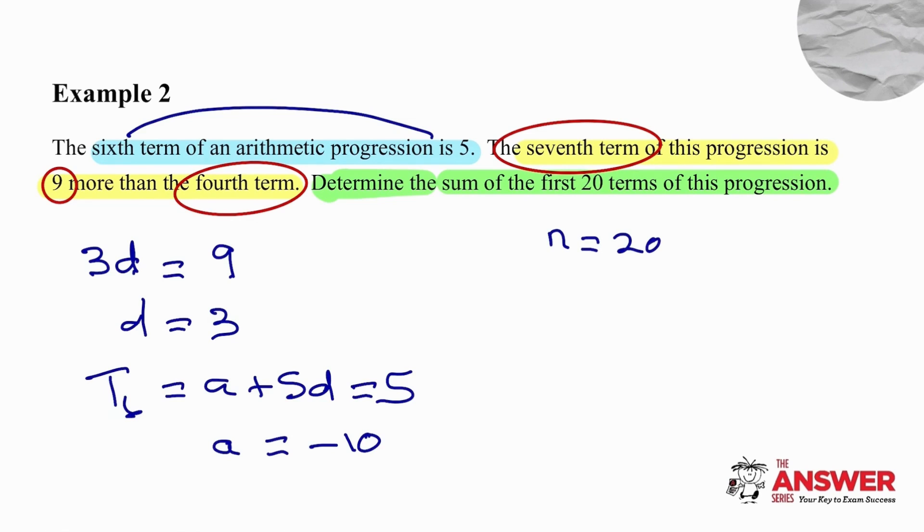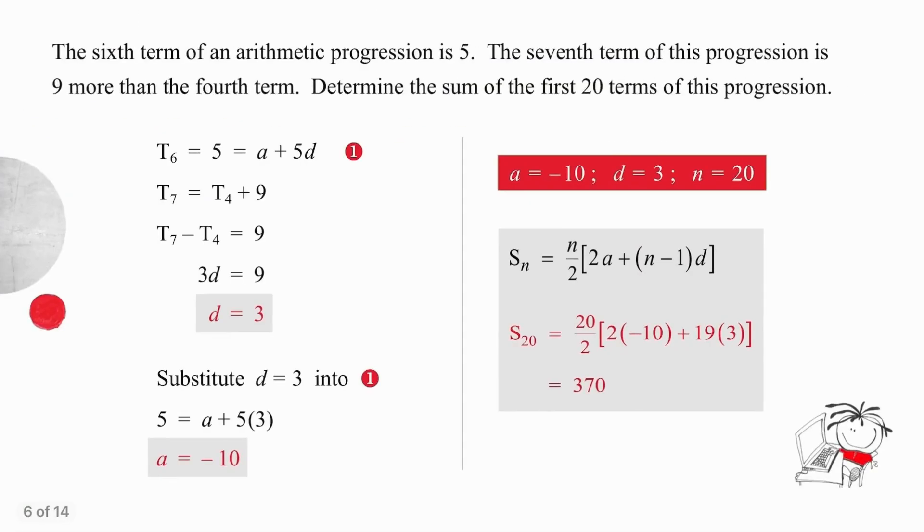So we simply use our A, our D, and our N value. Substitute these three values into the sum formula and work out the result. Pause the video, look at the longer version of the answer, and when you're ready and you've processed all of this we'll do the next question together.